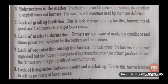Sixth defect: Lack of market information. Farmers are not aware of marketing conditions and future prices, and therefore are exploited by brokers and middlemen. Farmers don't even know at what prices their goods are being sold in the market.